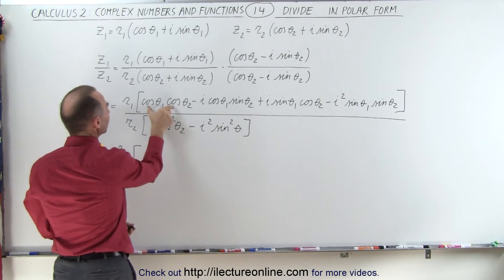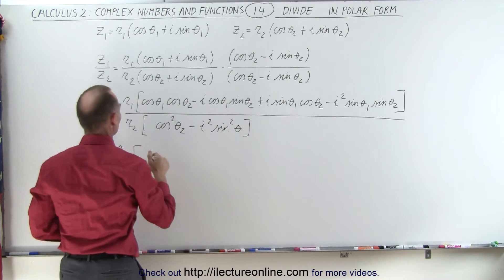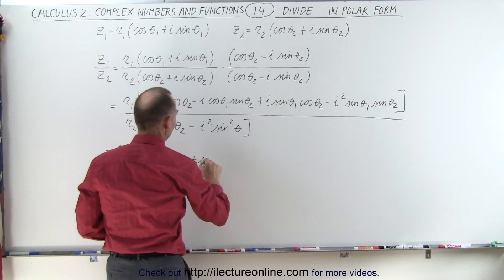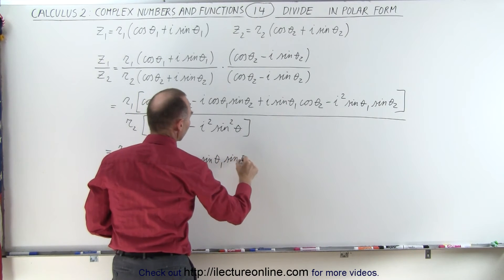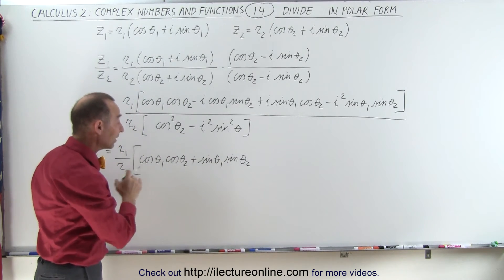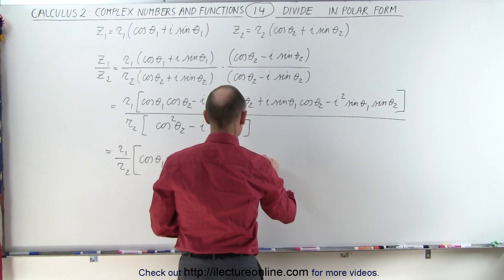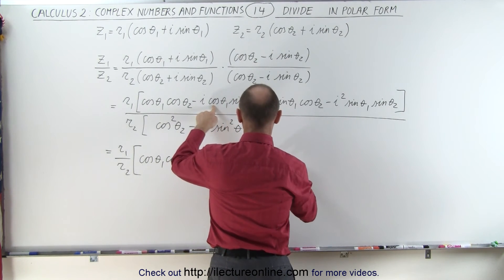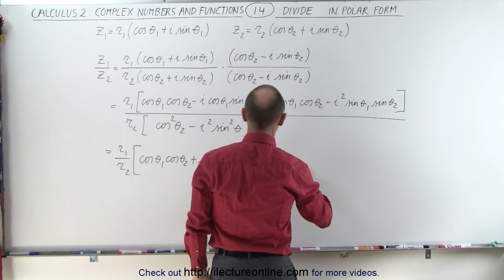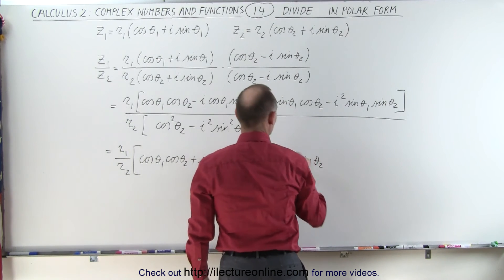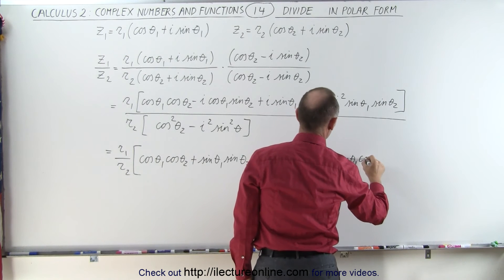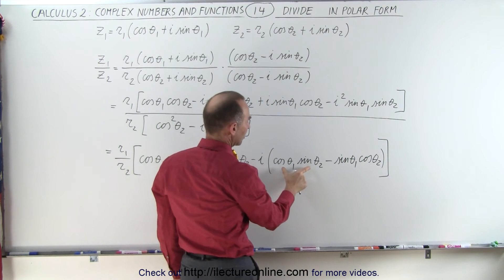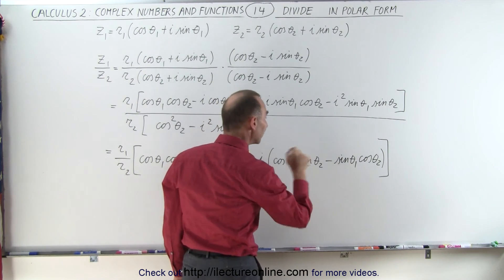Now let's combine the real part: that becomes the cosine of theta 1 times the cosine of theta 2 plus the sine of theta 1 times the sine of theta 2. That looks familiar — that's the cosine of theta 1 minus theta 2. Then we factor out minus i, giving us the cosine of theta 1 times the sine of theta 2 minus the sine of theta 1 times the cosine of theta 2, which is the sine of theta 1 minus theta 2.